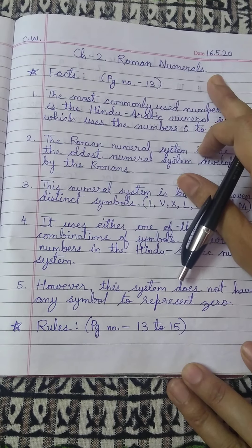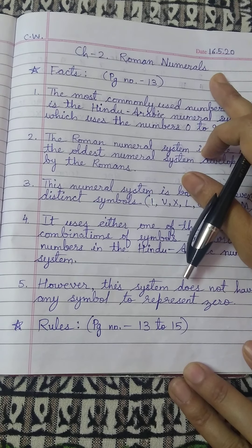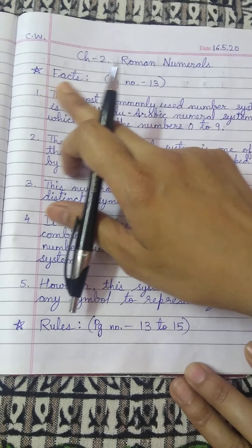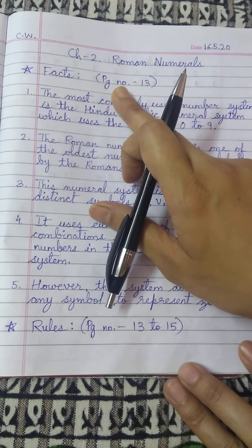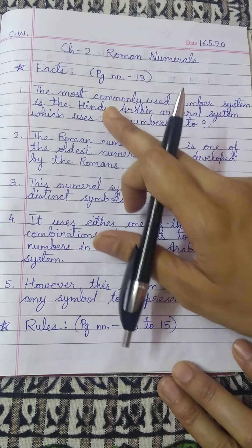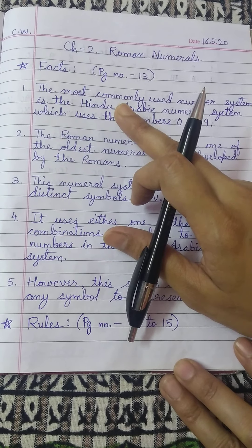Show class work. Chapter number 2, roman numerals, as heading. And before going to the exercise we will write some facts, rules and table. So put a star, write facts. You will find this on page number 13. When you are writing from the video, just pause it and then write in your notebook as it is.